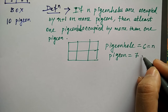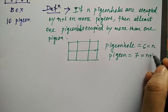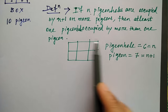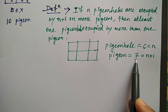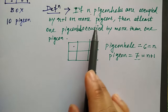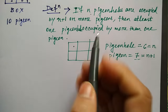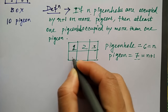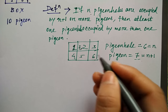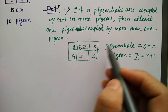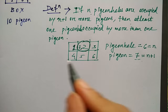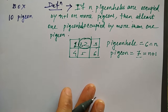So if the number of pigeon holes is n and the number of pigeons is n plus one, and all pigeon holes should be occupied by n plus one pigeons, then at least one pigeon hole is occupied by more than one pigeon. Obviously, if you keep one, two, three, four, five, six, the seventh one has to go with some other pigeon. So at least one pigeon hole is occupied by more than one pigeon. We'll see examples in the next video.